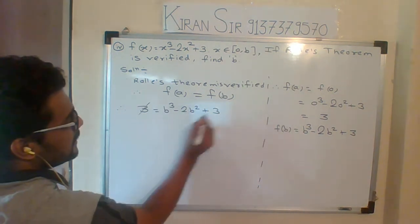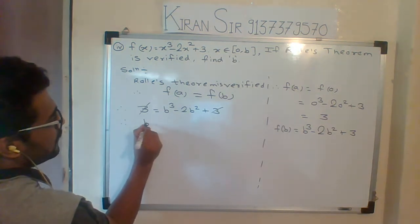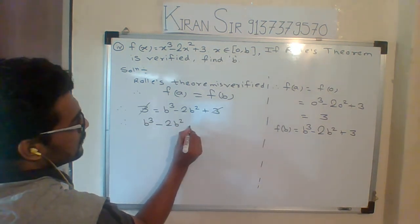So we observe that this 3 and 3 get cancelled. So what are the remaining terms? b cubed minus 2b squared equals to 0.